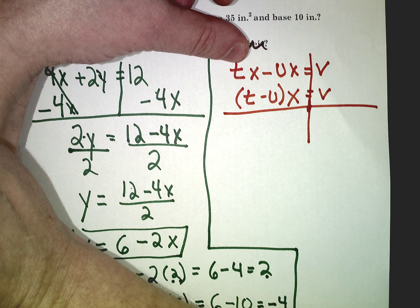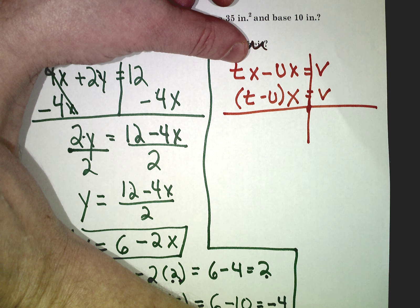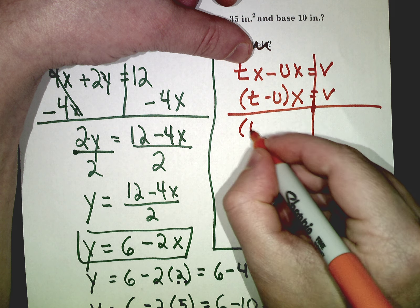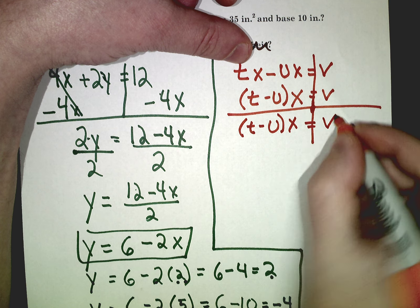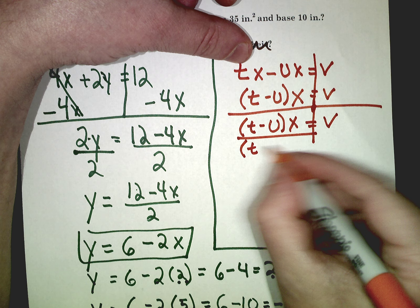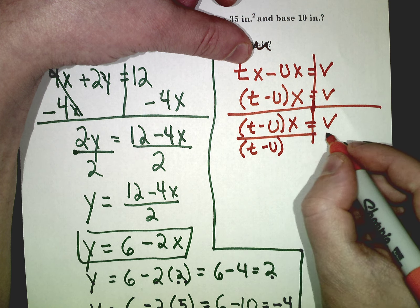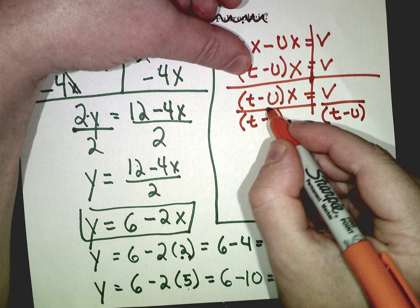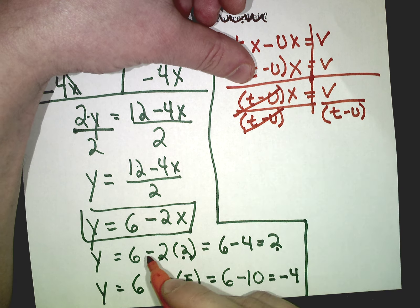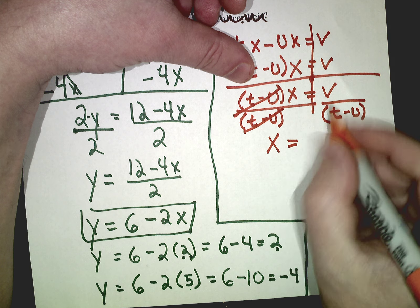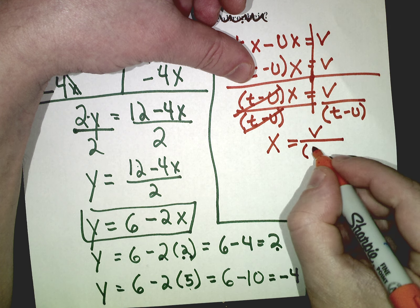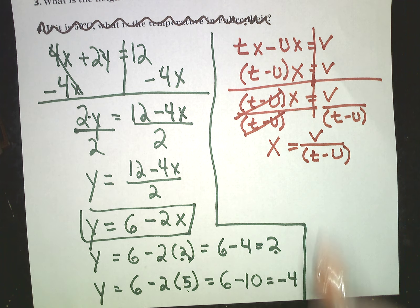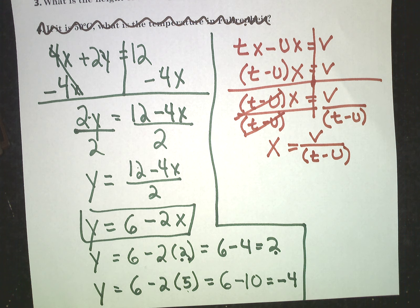So t minus u — let's say it was 3 minus 2, eventually it's going to be a number like 1, so I divide it. Since t minus u at this point is going to become something, I'm going to divide both sides by whatever this number becomes. I'm setting it up for someone else to plug in the numbers. So x equals v over t minus u. Now you've made a formula for someone, and you said: if you know v, t, and u, I'll tell you what x is — all you have to do is plug in the numbers.